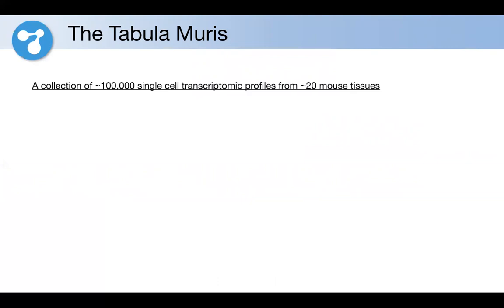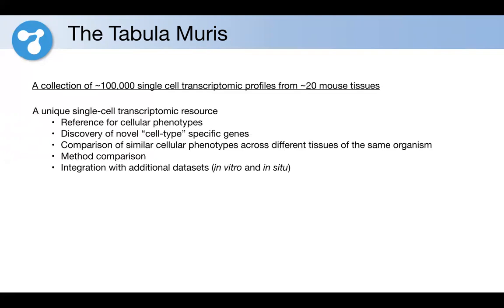The Tabula Muris is basically a collection of approximately 100,000 single cell transcriptome profiles from across 20 different mouse tissues and across seven or eight different mice. We think this constitutes a unique single cell transcriptome resource, not so much because of the number of cells—today's technologies allow pretty much everyone to generate these numbers without much trouble—but we've done so across 20 different tissues, meaning we're able to investigate single cell phenotypes across the entire organism.